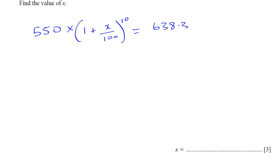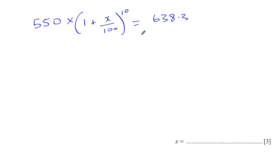Now, we have to solve this equation. This is like an exponential equation - well, actually, it's not an exponential equation, it's a normal equation, it just has a power. So, first thing we've got to do is divide both sides by 550 to get rid of this 550. So, we have 1 plus X over 100, all of that is to the power of 10, equal to 638.3 over 550.